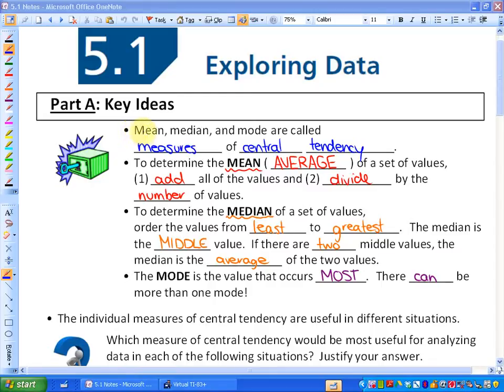So first of all, looking at some key ideas: mean, median, and mode are all called measures of central tendency because they all measure the center of data in different ways. So we're going to define each one in the next three bullets here.